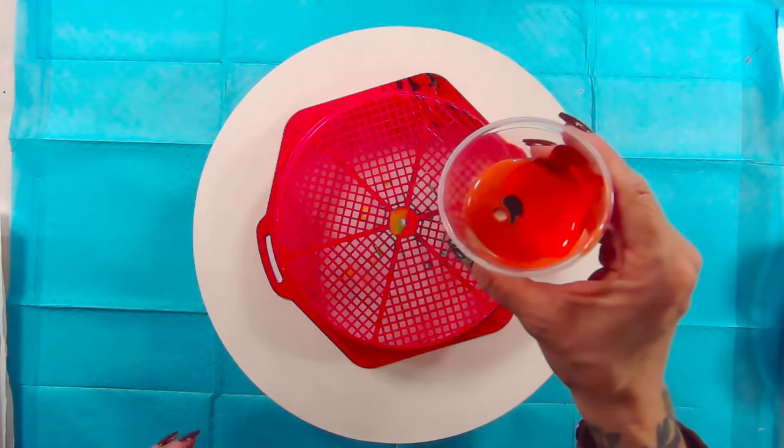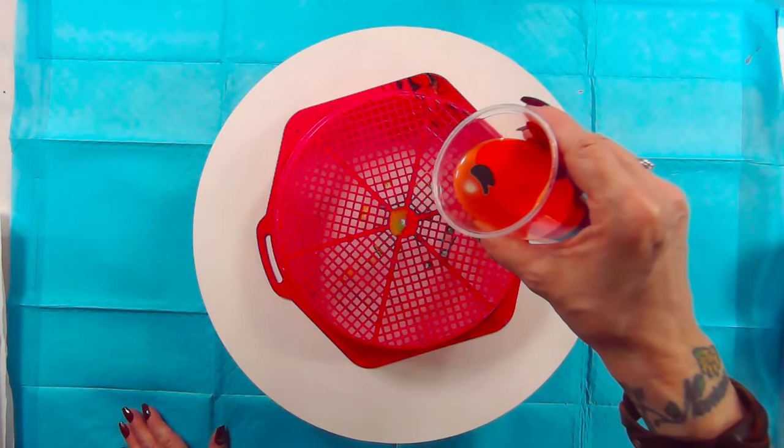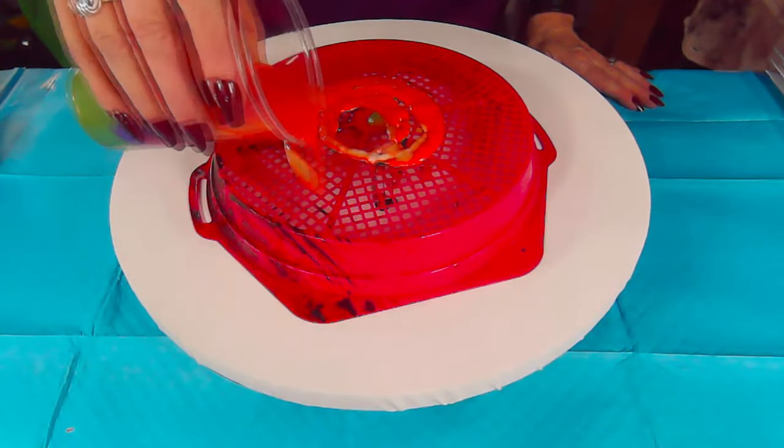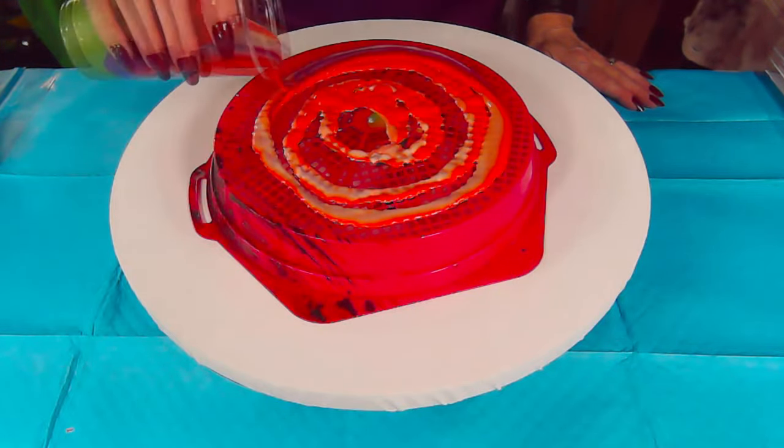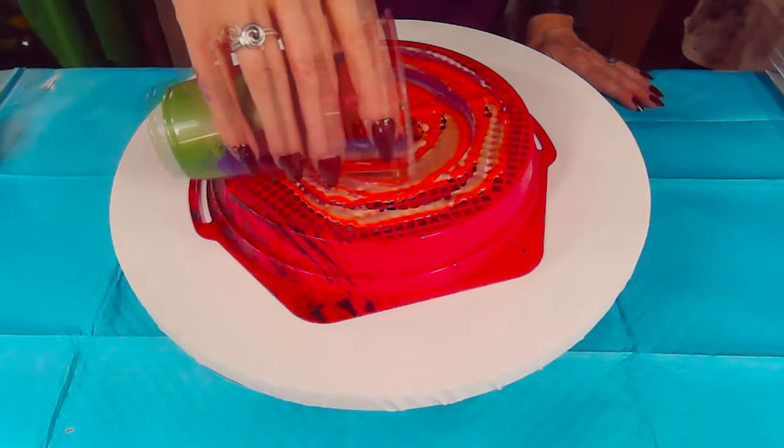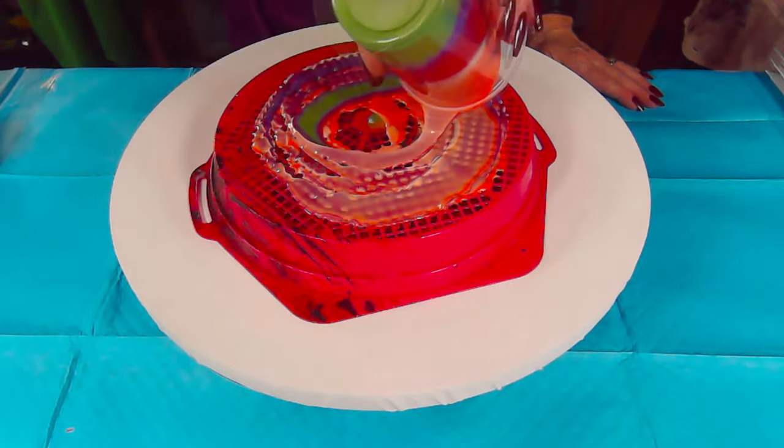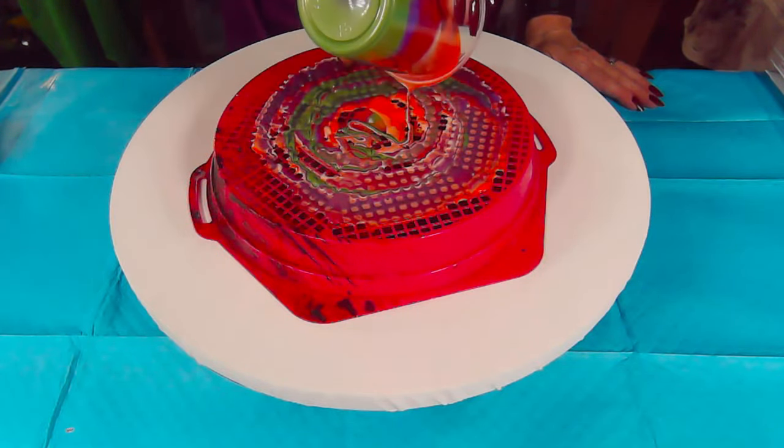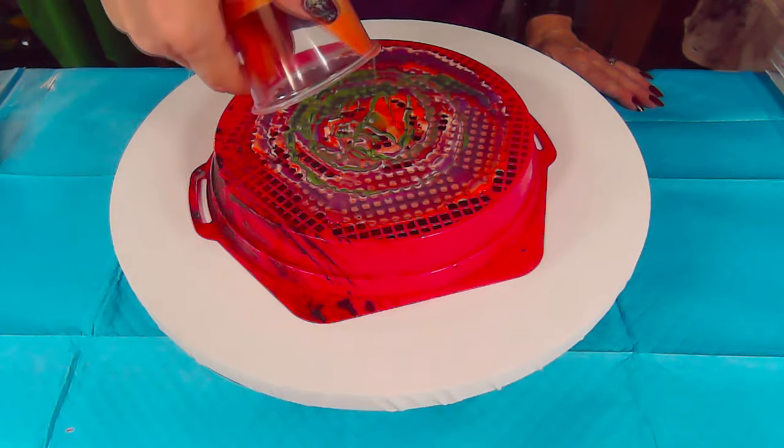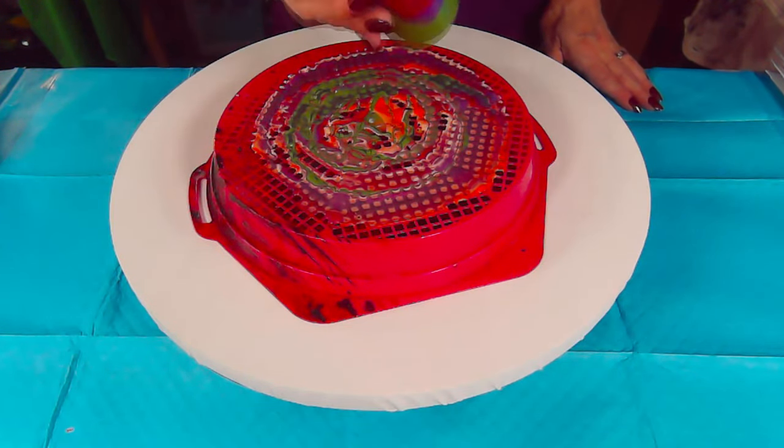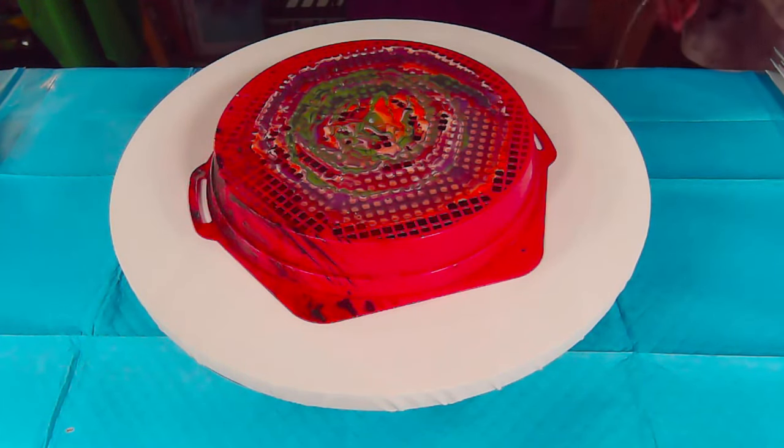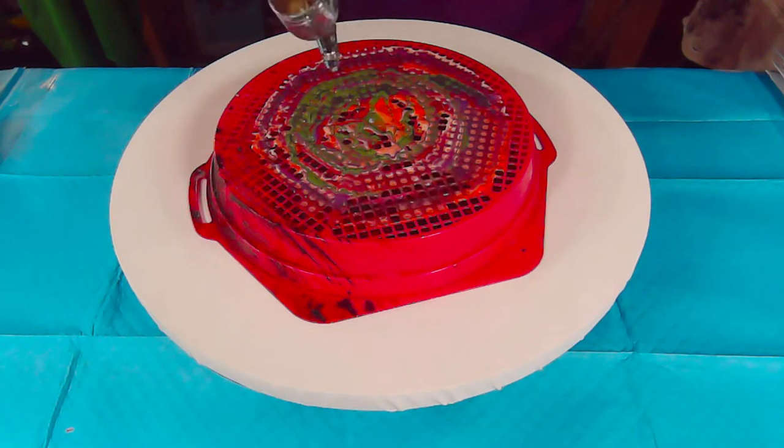Okay, now we're going to pour this through the strainer and this is going to be our background. Okay, that's going to make a pretty pattern. And then blow out the paint. So here we go.